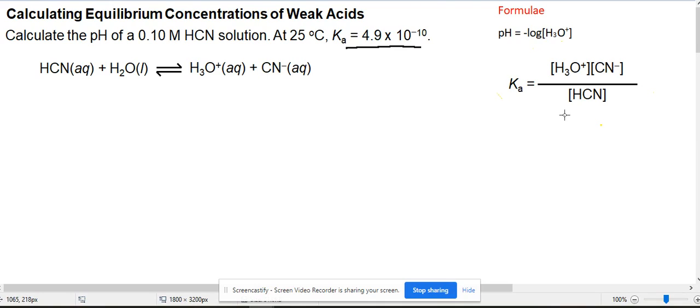First, we want to write the equation for the acid in water. Remember, an acid is a substance that when placed in water releases H+ ions, which combine with water to form H3O+, and then the conjugate base CN-. So this is HCN ionizing when placed in water.